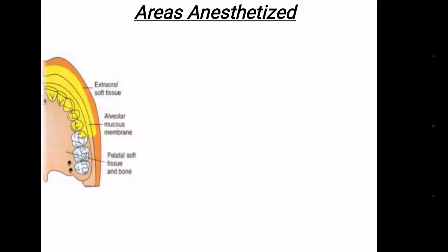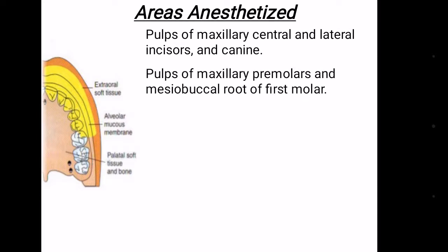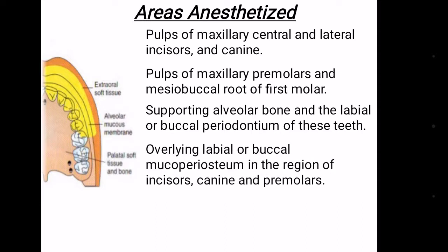Areas which are anesthetized include the pulp of the maxillary central and lateral incisors and canines, the pulp of maxillary premolars and the mesiobuccal root of the first molar, the supporting alveolar bone, and the labial or buccal periodontium of these teeth, as well as the overlying labial or buccal mucoperiosteum in the region of the incisors, canines, and premolars.